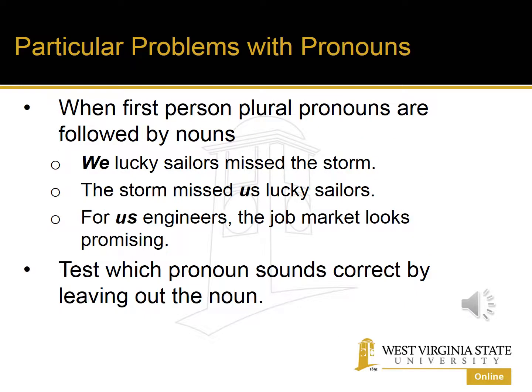Another interesting problem area is when a first-person plural pronoun is followed by a noun. We have to look carefully at the positioning in the sentence. 'We lucky sailors' is the subject, so it's nominative: 'We lucky sailors missed the storm,' not 'us lucky sailors.' However, if 'the lucky sailors' is the object, we say 'The storm missed us lucky sailors.' And in a prepositional phrase, it has to be objective: 'for us engineers,' not 'for we engineers.'